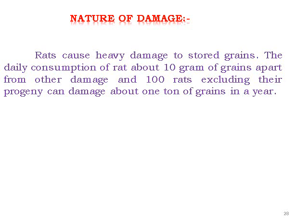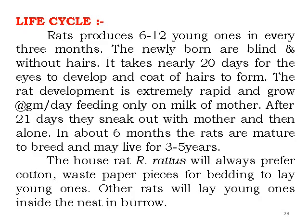Nature of damage: rats cause heavy damage to stored products. The daily consumption rate is about 10 grams per adult per day, and even 100 rats excluding their progeny can damage about 1 ton of grain per year. Life cycle: rats produce 6 to 12 young ones every 3 months. Newly born are blind and without hair. It takes nearly 20 days for eyes to develop and hair coat to form. Rats grow at about 1 gram per day, feeding only on mother's milk. After 21 days they venture out, and in about 6 months they are mature and start breeding, living for 3 to 5 years.